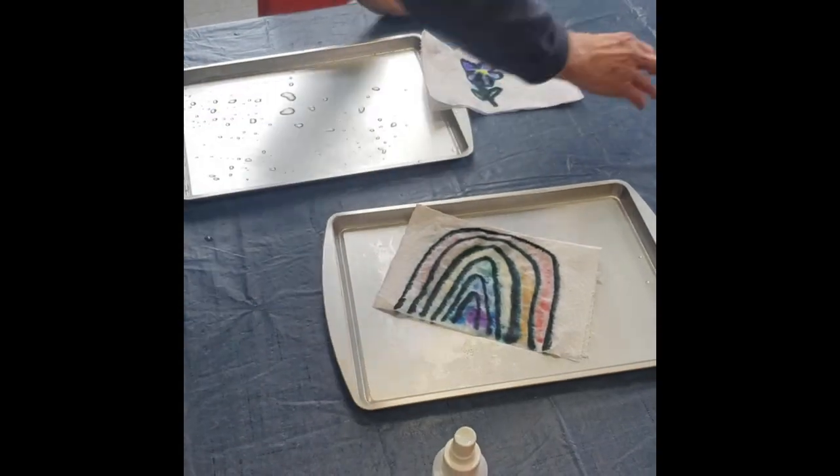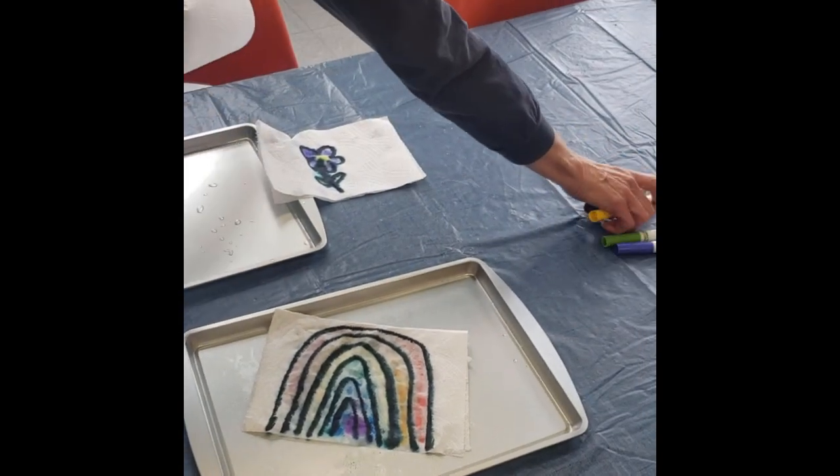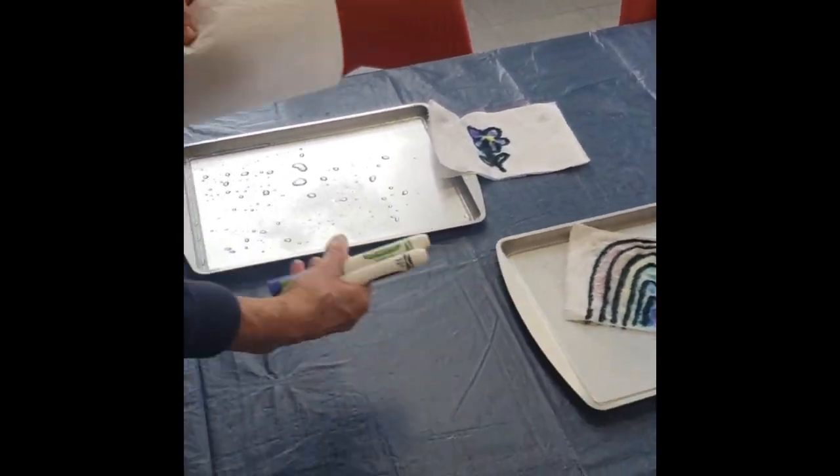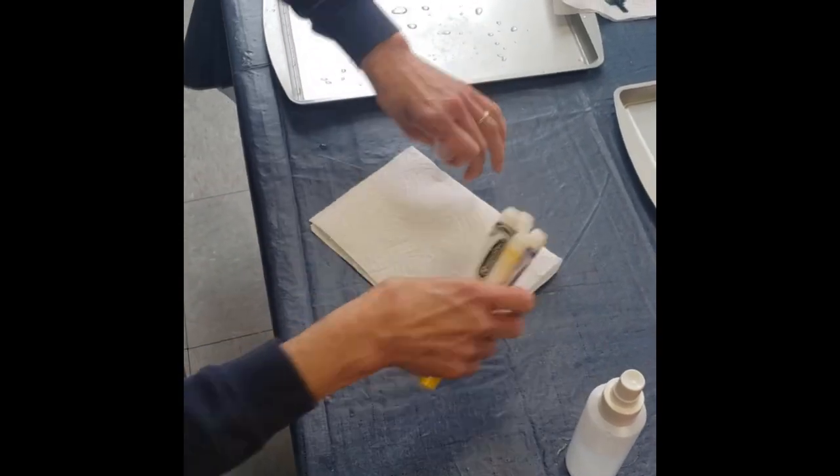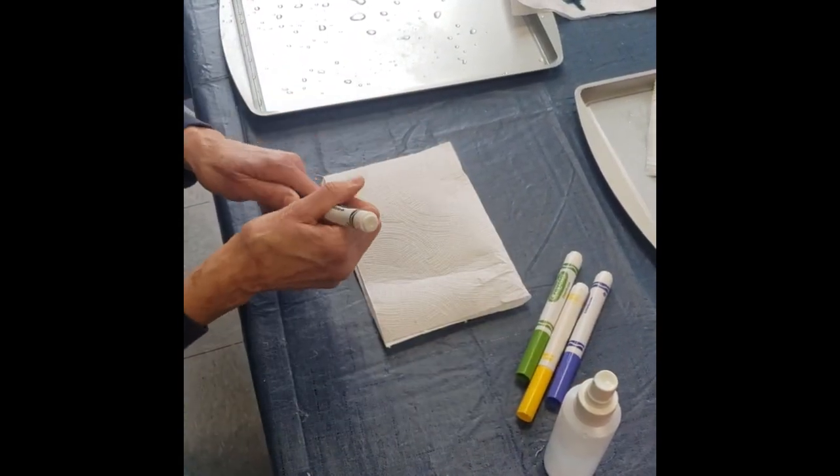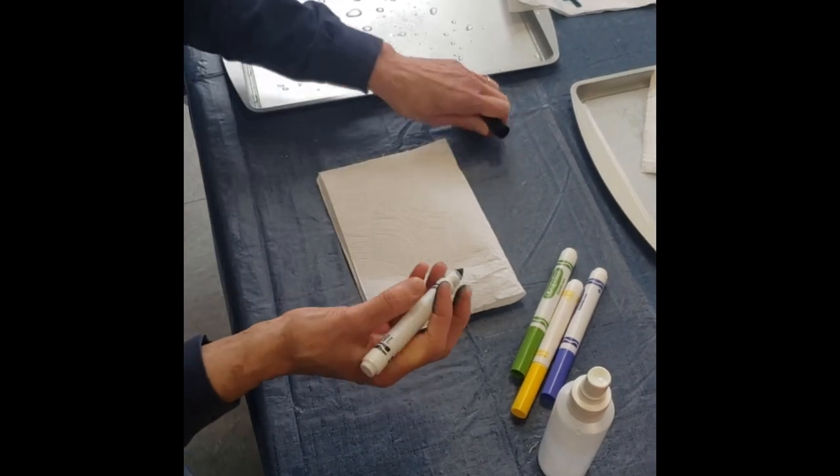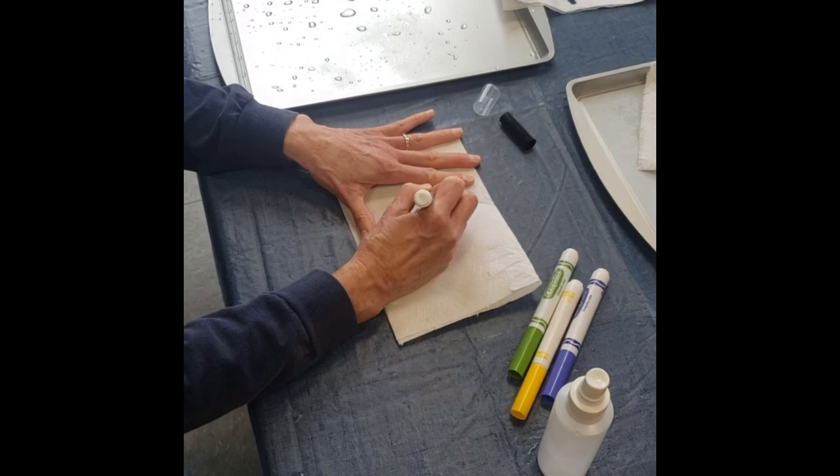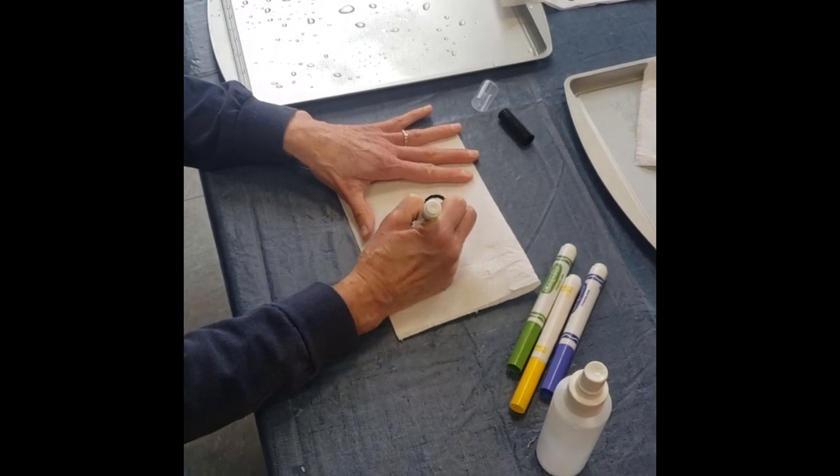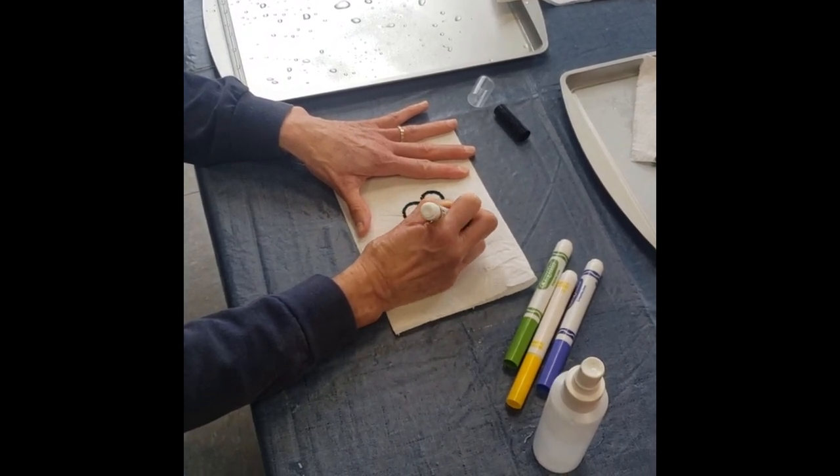All right, let's start again together, but this time I'm just going to do a flower. Take your paper towel and fold it in half, or you can do any kind of design you want to do. Take your marker and press really hard on your paper towel, and make the design you want.